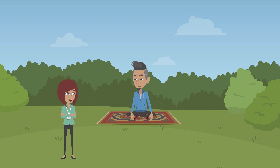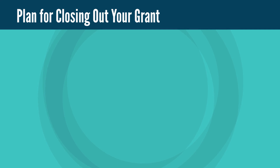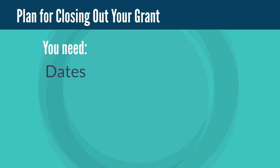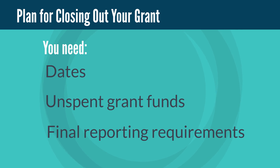So let's say they spend all the grant money and I have the documentation I need to show they did it correctly. Now what? You must begin with the end in mind. You need a plan for closing out the grant. For example, tell the grant recipients what the end dates are, what happens to unspent grant funds, and the final reporting requirements.